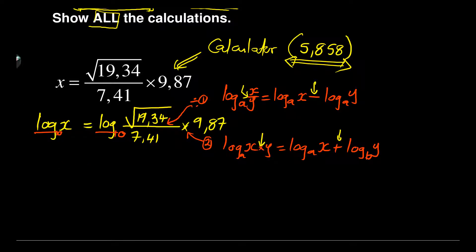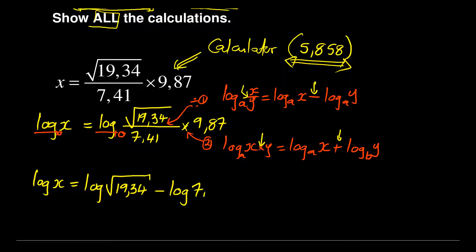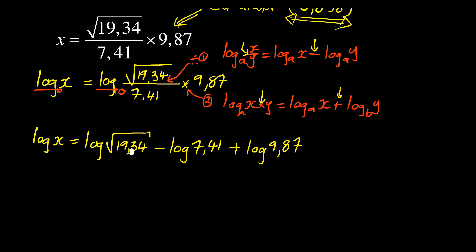With those laws in mind, I can now rewrite the right-hand side. I'll have: log x equals log of the square root of 19.34, minus log 7.41, plus log 9.87. The division became a minus sign and the multiplication became a plus sign.